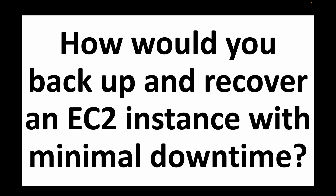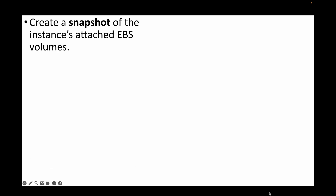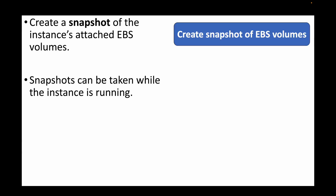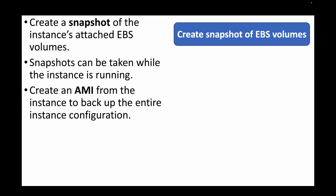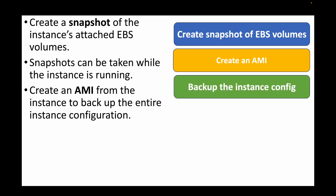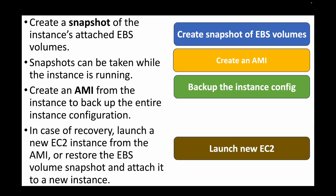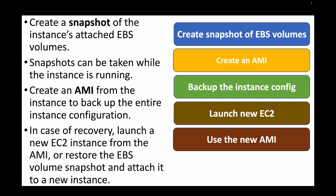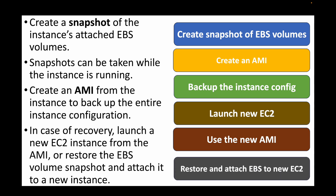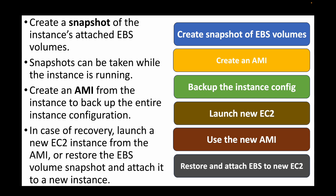The next question: how would you backup and recover an EC2 instance with minimal downtime? We take snapshots of the EBS volumes — these can be taken while the instance is running — and also create an AMI from the instance to backup the entire configuration. For recovery, we can launch a new EC2 instance from the AMI or restore the EBS volume snapshot and attach it to a new EC2 instance to get the data back. That brings us to the end of our scenario-based EC2 interview questions.